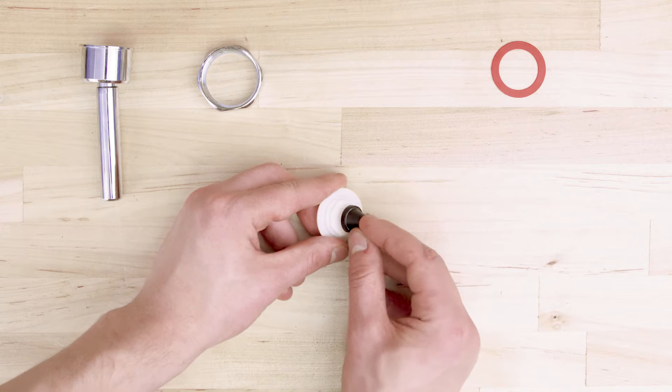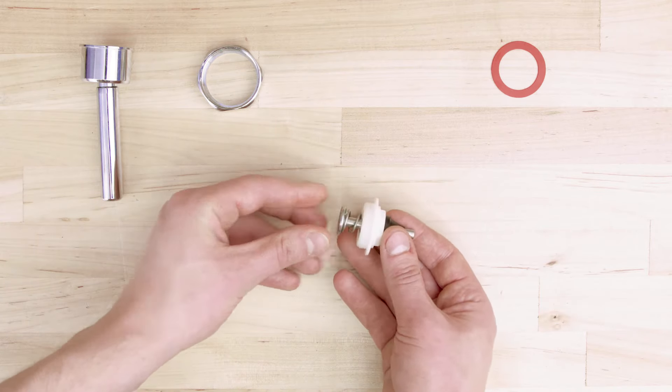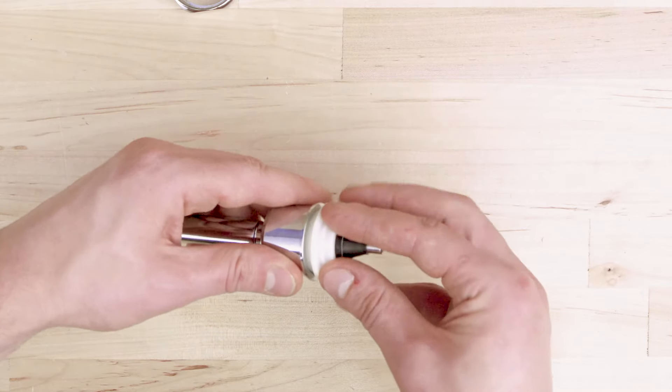Now take the new seal and place it on the bushing. Then slide the spring and bushing onto the plunger. Now screw on the bushing.